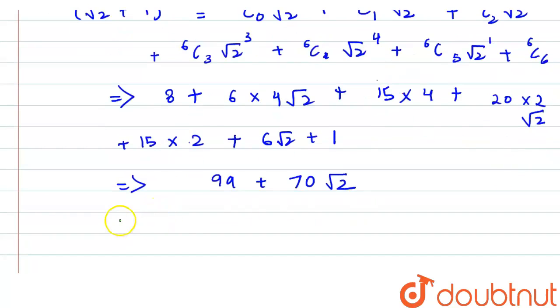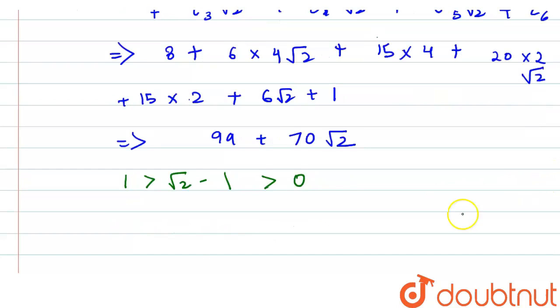Here let us see one important thing: the value of √2 - 1 is greater than 0 and it is less than 1. So if we put power 6 here, then that will be greater than 0 and less than 1.